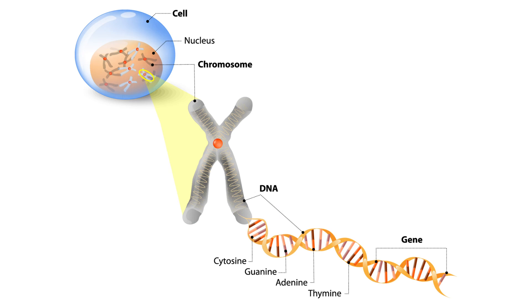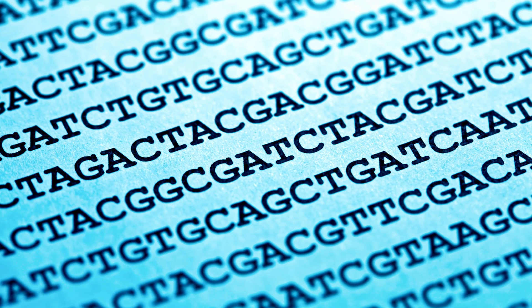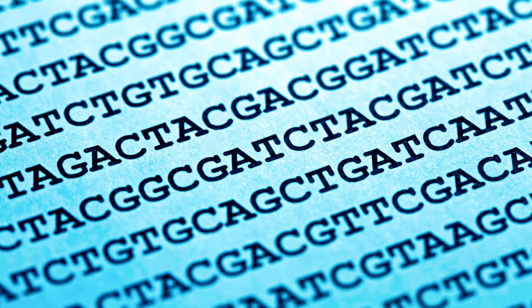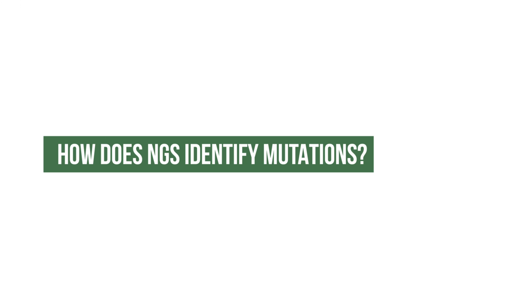What is sequencing? Genes consist of DNA, and DNA is a series of nucleic acids that we summarize as G, A, T, and C. Sequencing is a way of converting the DNA molecule into a series of letters — G, A, T, C — that we can analyze on the computer.